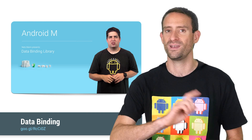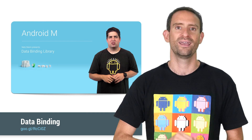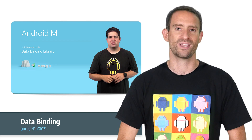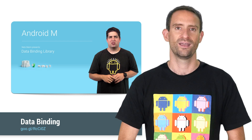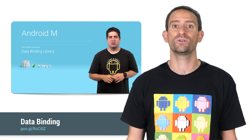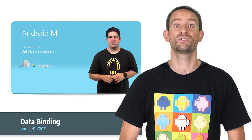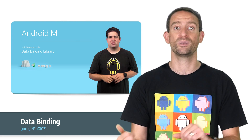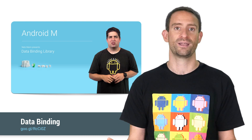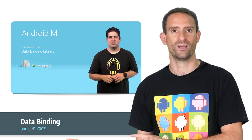Not strictly part of Marshmallow, but definitely worth mentioning, is the introduction of data binding. It's an Android Studio feature from 1.3 onwards, and it reduces the amount of code you need to write to hook up your XML layouts with your activities. See Netto's video for the lowdown.